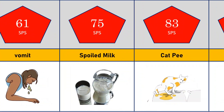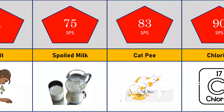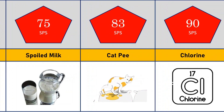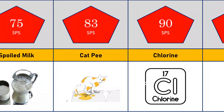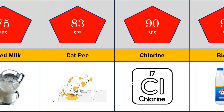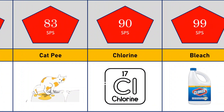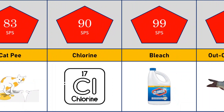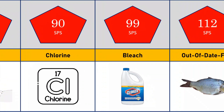Smell of dead pee: 83 SPS. Smell of out of teeth: 18 SPS. Smell of BJ's: 99 SPS.